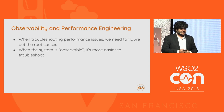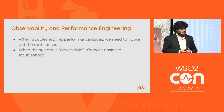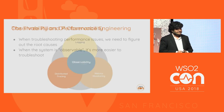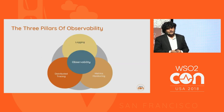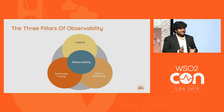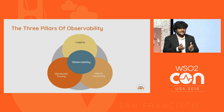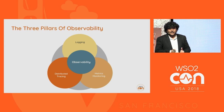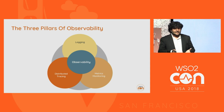In performance engineering, it's better to have the system observable to be able to easily troubleshoot it. There are three main factors in observability: logging, metrics monitoring, and tracing.